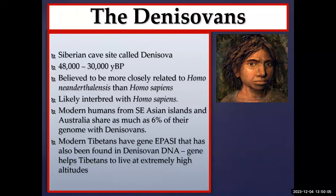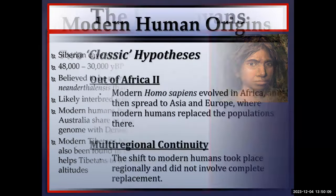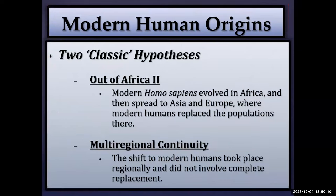Thinking back to our human adaptation section on hypoxia adaptations — modern Tibetans have the gene EPAS1, which has also been found in Denisovan DNA. That gene helps Tibetans adapt and live more successfully in hypoxic environments, providing more evidence that many of these species very possibly successfully interbred and produced viable fertile offspring.